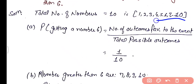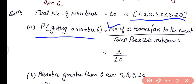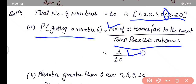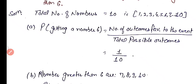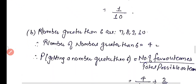In the solution, total numbers are 1 to 10 — that is 1, 2, 3, 4, 5, 6, 7, 8, 9 and 10. Probability of getting number 6: number of outcomes favorable to the event upon total possible outcomes. You have one number 6, and total outcomes are 10. So probability of getting number 6 is 1 by 10.